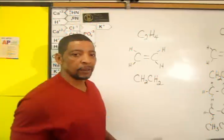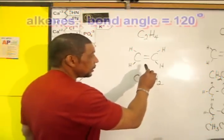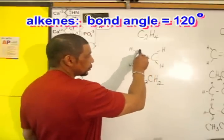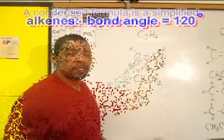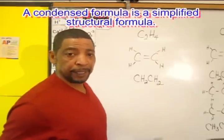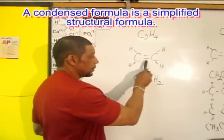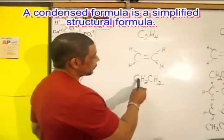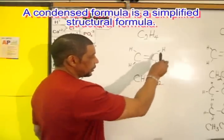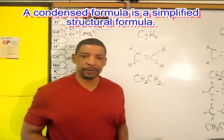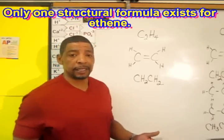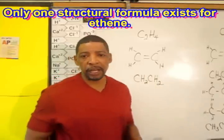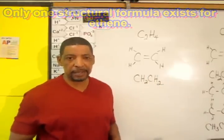The bond angles about the double bond in an alkene compound will always be 120 degrees. To write the condensed formula for this compound, simply copy the structural formula: CH2 and CH2. Because the compound ethene possesses only two carbon atoms, no other isomers may be written for this compound.